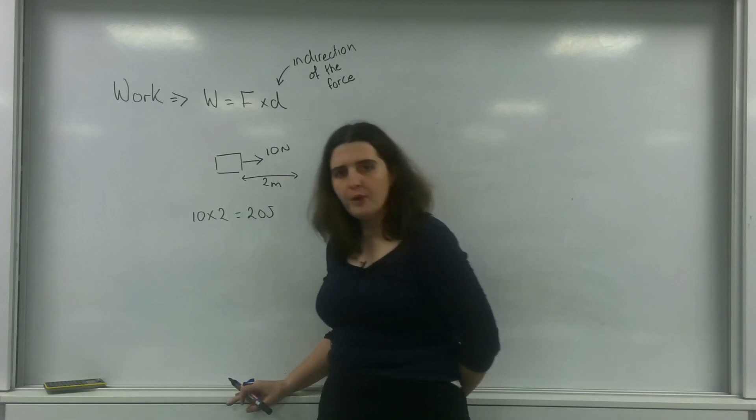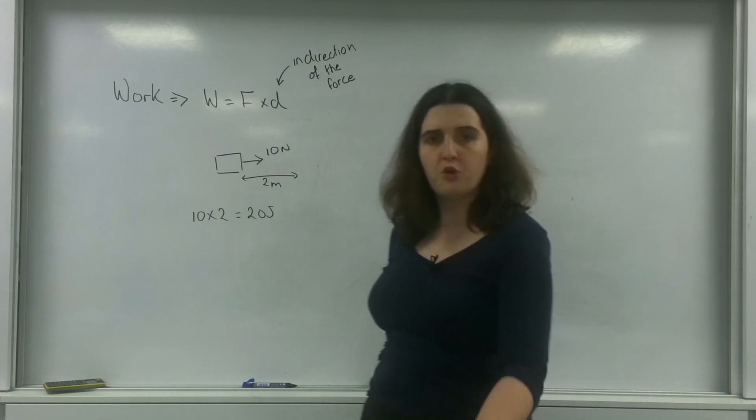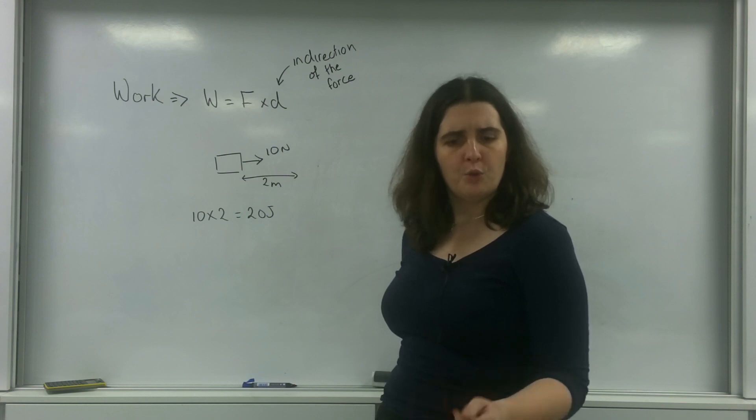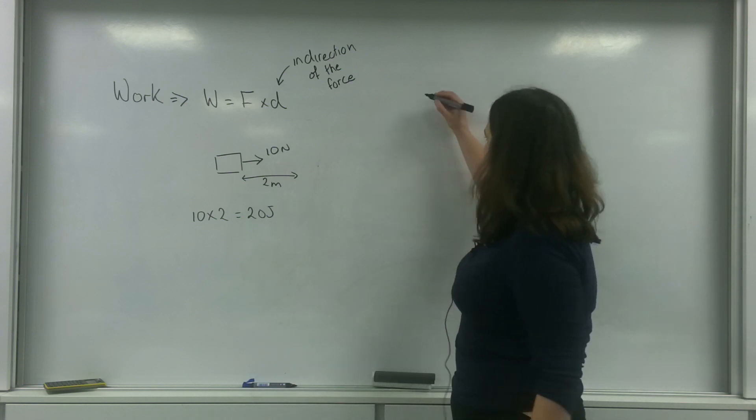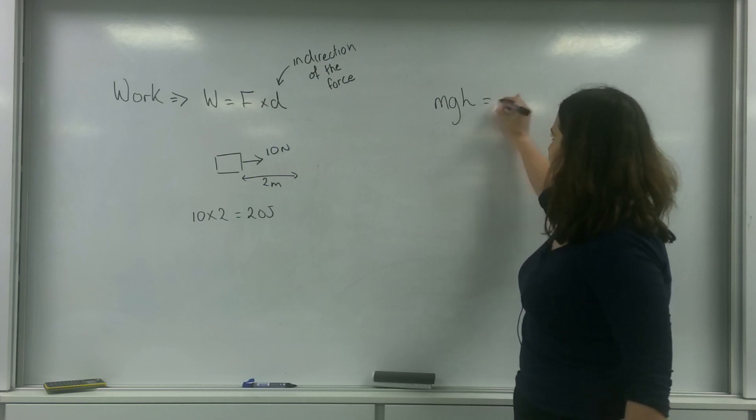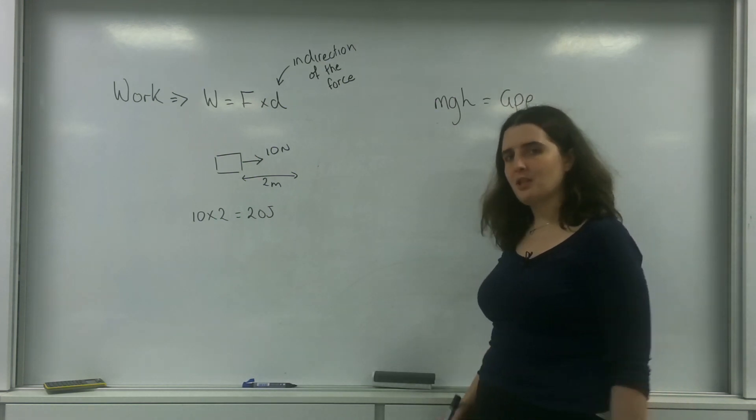And just to show you how important this formula is, if I start talking about the work done by dropping this object, the force that's causing that is of course the weight. So for a dropping object, the force is weight, which is mg, and the distance it's traveling is the height. And that there is gpe, gravitational potential energy.